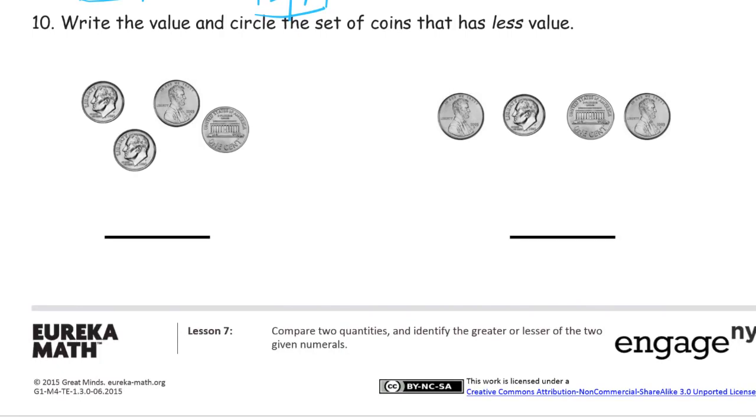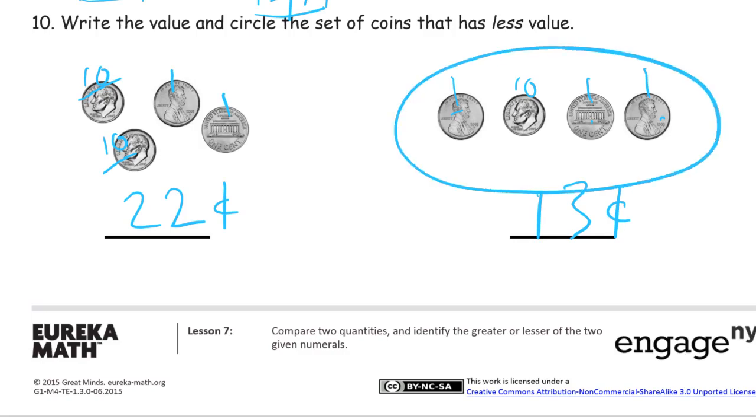Write the value and circle the set of coins that has less value. So that's a dime and that's 10, that's a dime and that's 10, and these are pennies and those are ones. Here's a dime and that's 10, and that's a penny, a penny, and a penny. This is 10, 20, two tens and two ones. And this is one 10 and one two three ones. So we have 22 and 13 cents. Circle the set of coins that has less value. 13 cents is less than 22 cents.